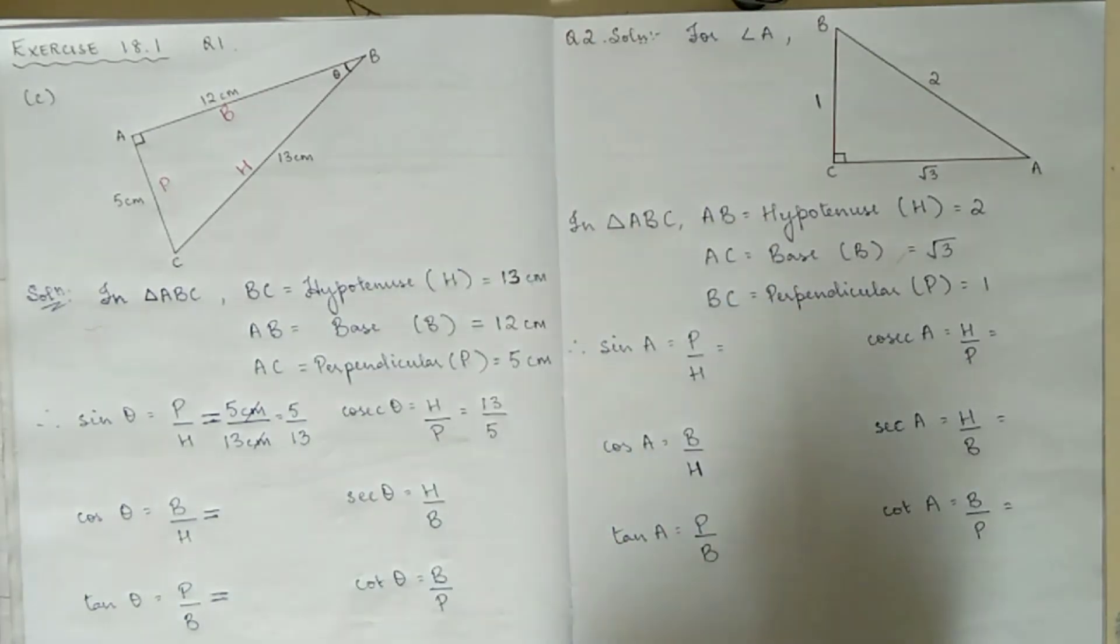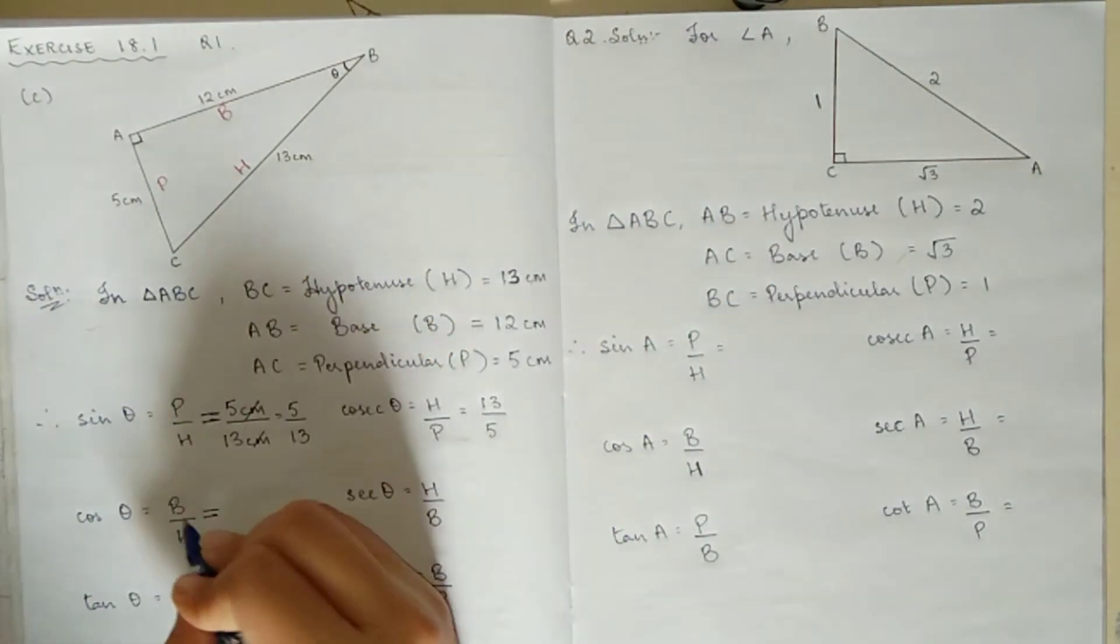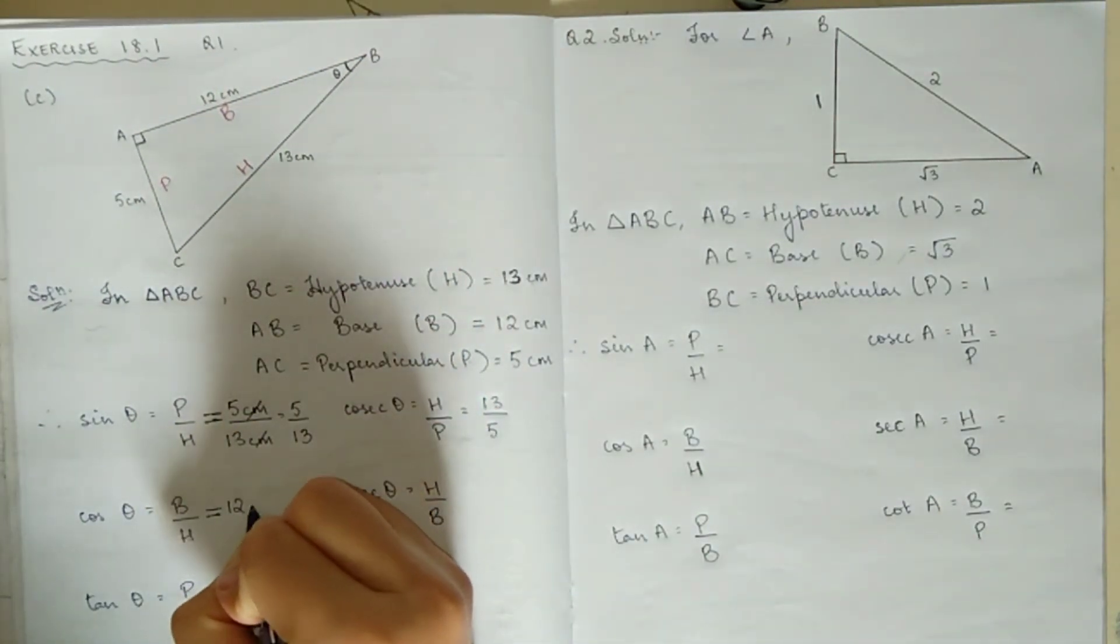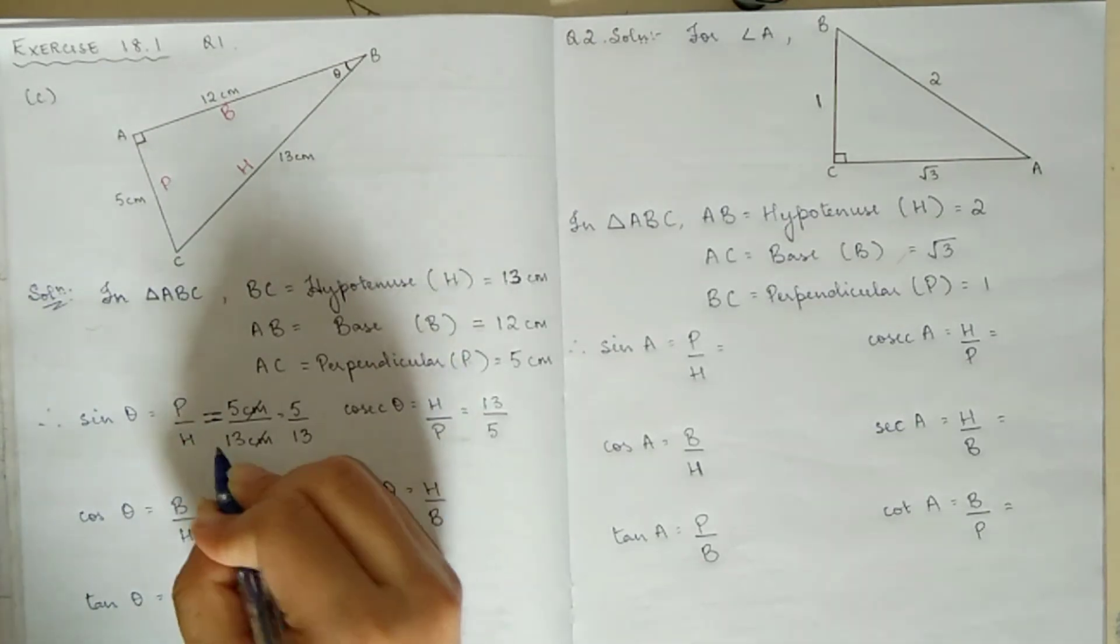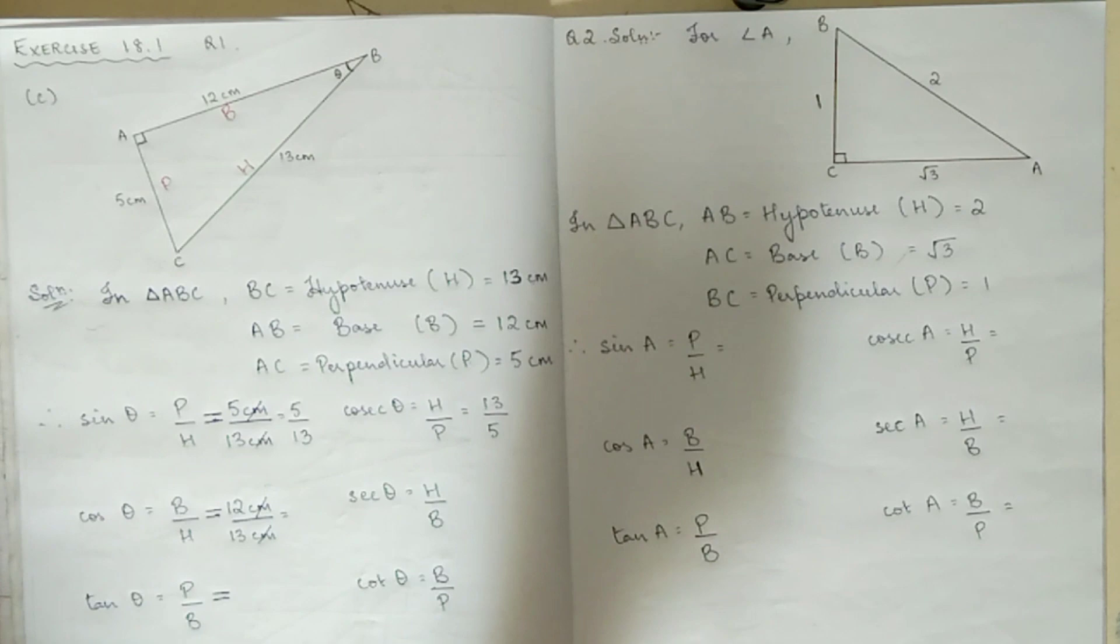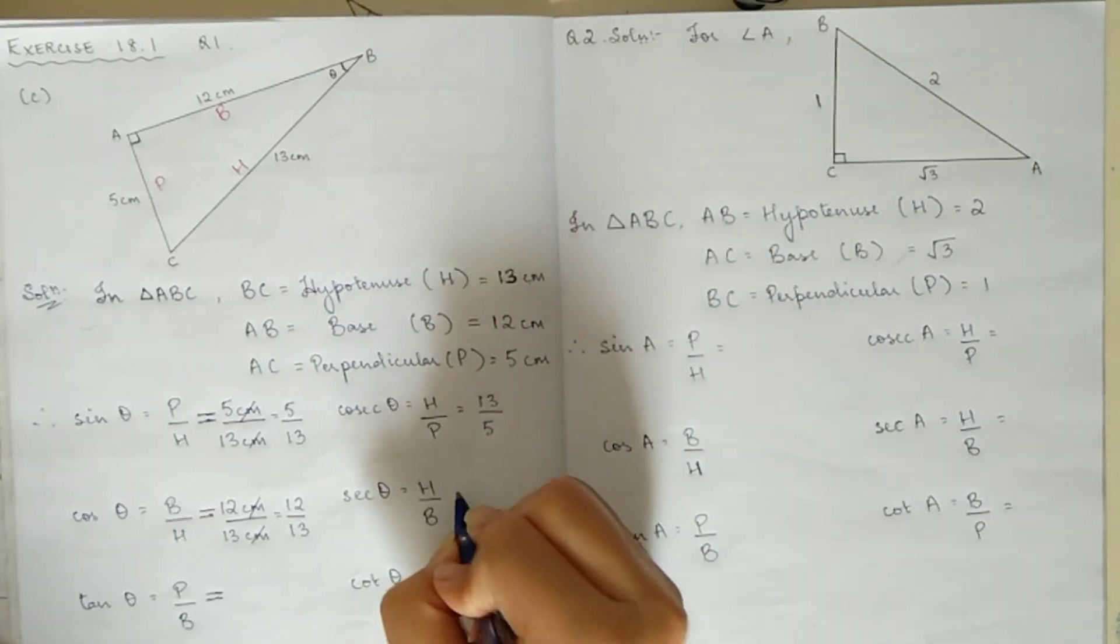For cosec, it's the reciprocal, so H by P gives us 13 by 5. Similarly, for cos, we have B by H. B is 12 cm and H is 13 cm, so cos A equals 12 by 13.